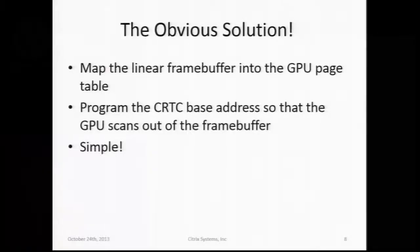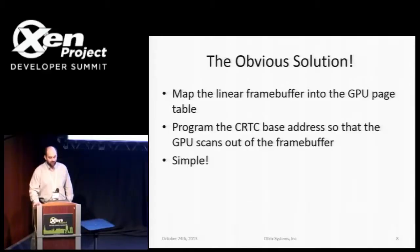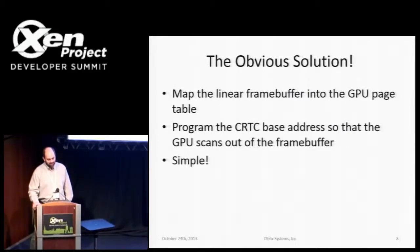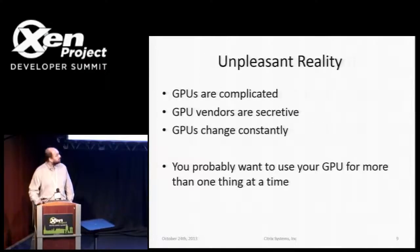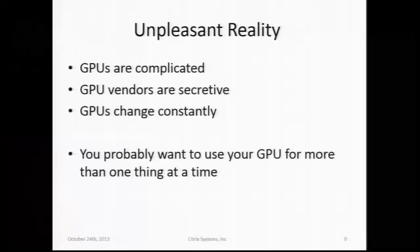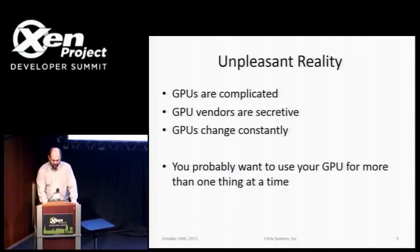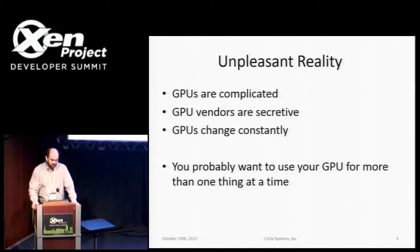That leads us to the obvious solution: if you set up the GPU page table to map the linear frame buffer of the domain and program the CRTC controller base address to point to the mapping in GPU address space, you have bits on your screen with no copies. Unfortunately, nothing's simple. You don't necessarily know how to manipulate your GPU's page tables — the vendor might not tell you. And even if they do, next week they release a new GPU and it stops working.